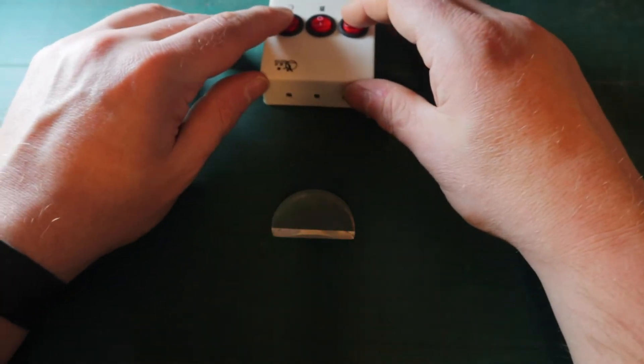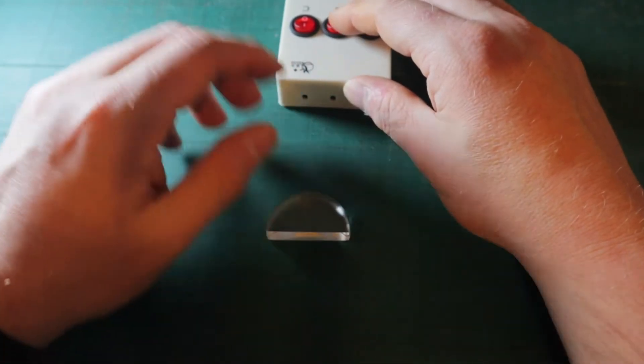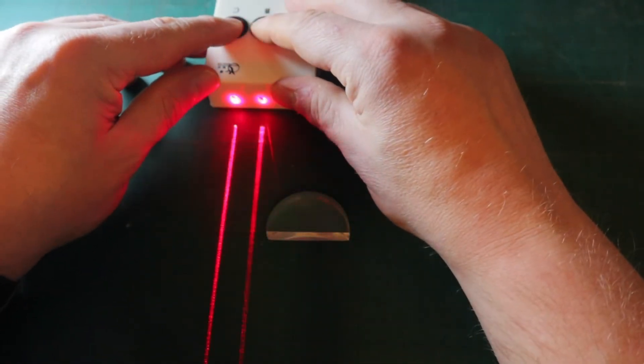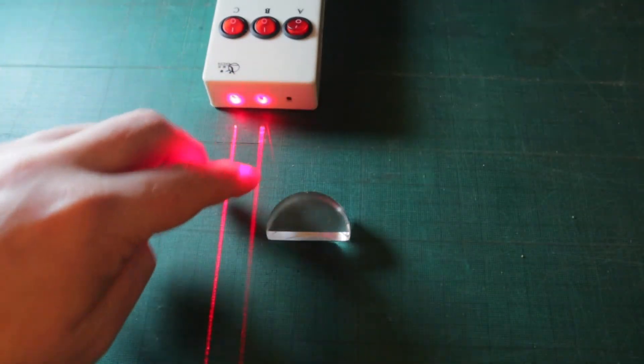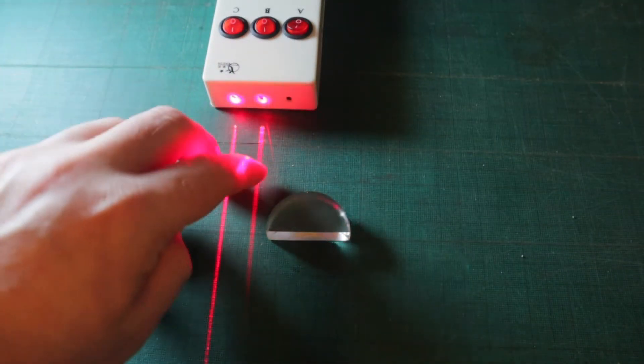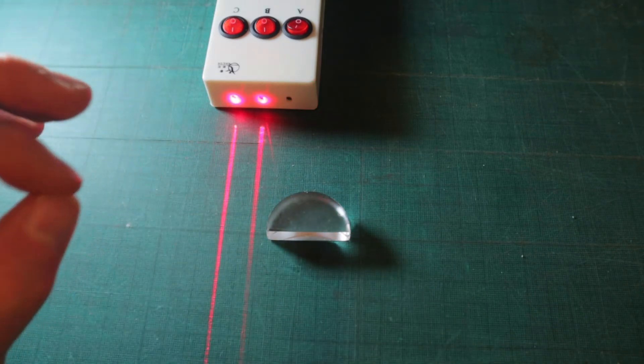So what we're going to do is we're going to set this up above the lens. Now I want you to imagine that this is a cross-section of the lens and these two lines are cross-section of the laser beam as it comes out of the glass CO2 laser.